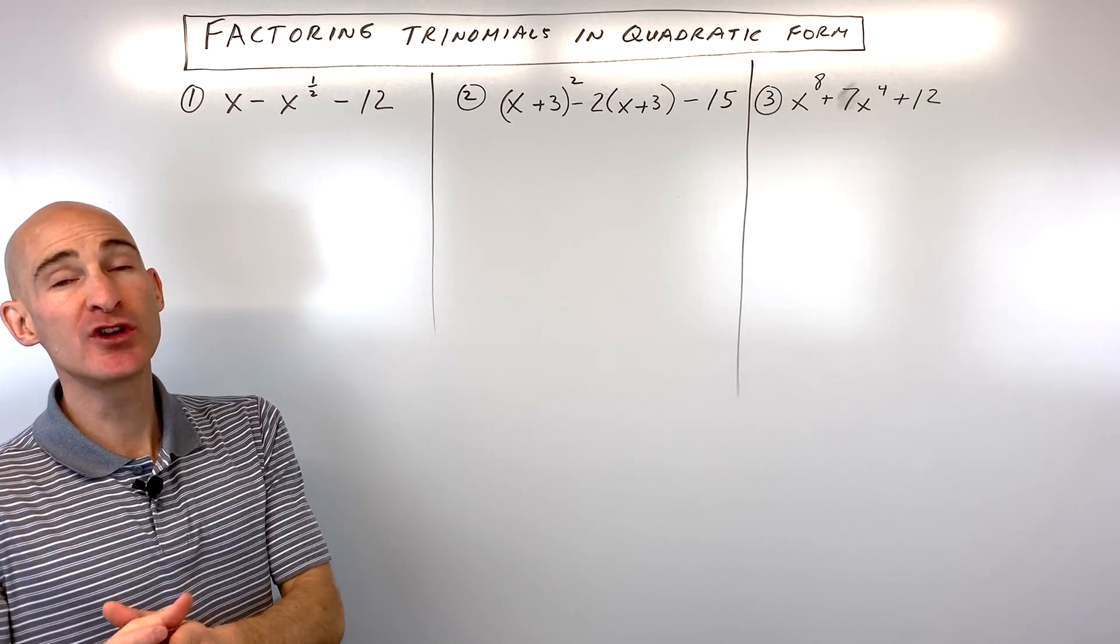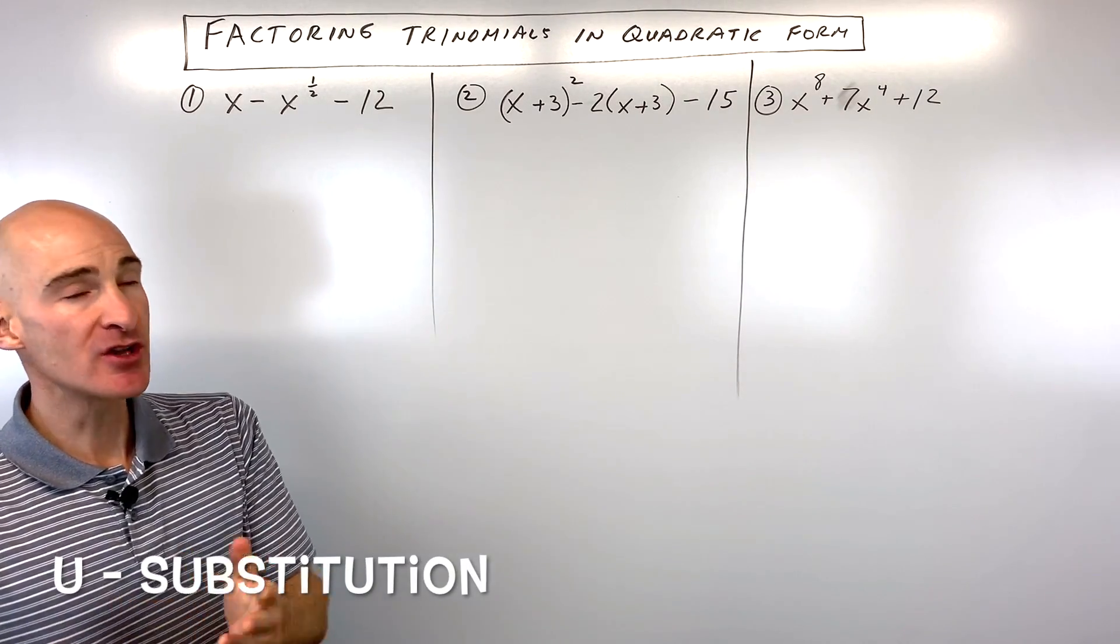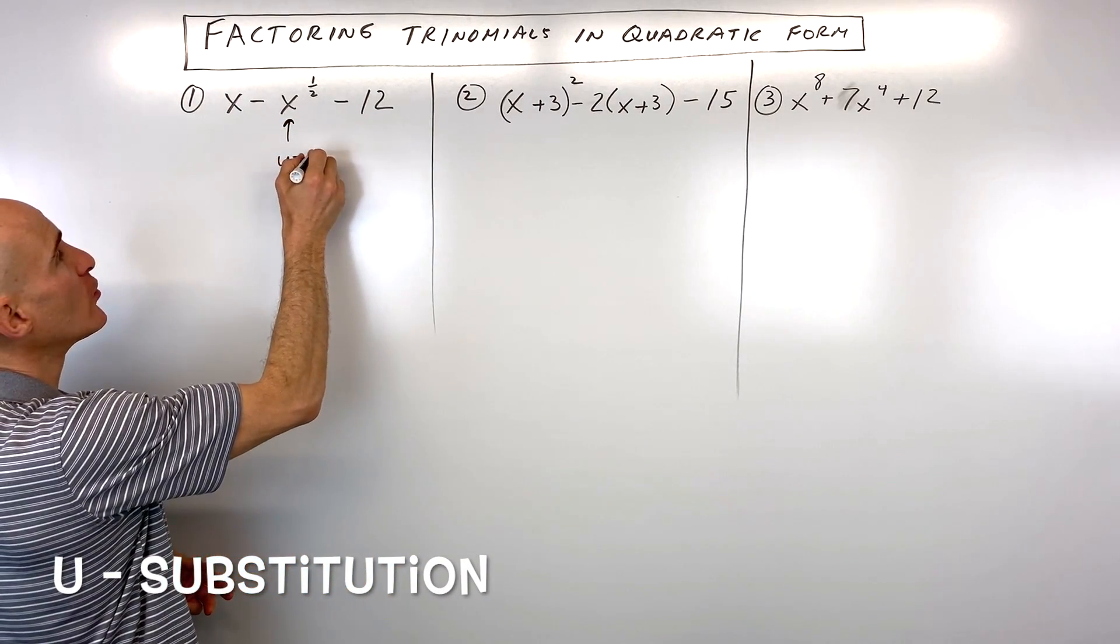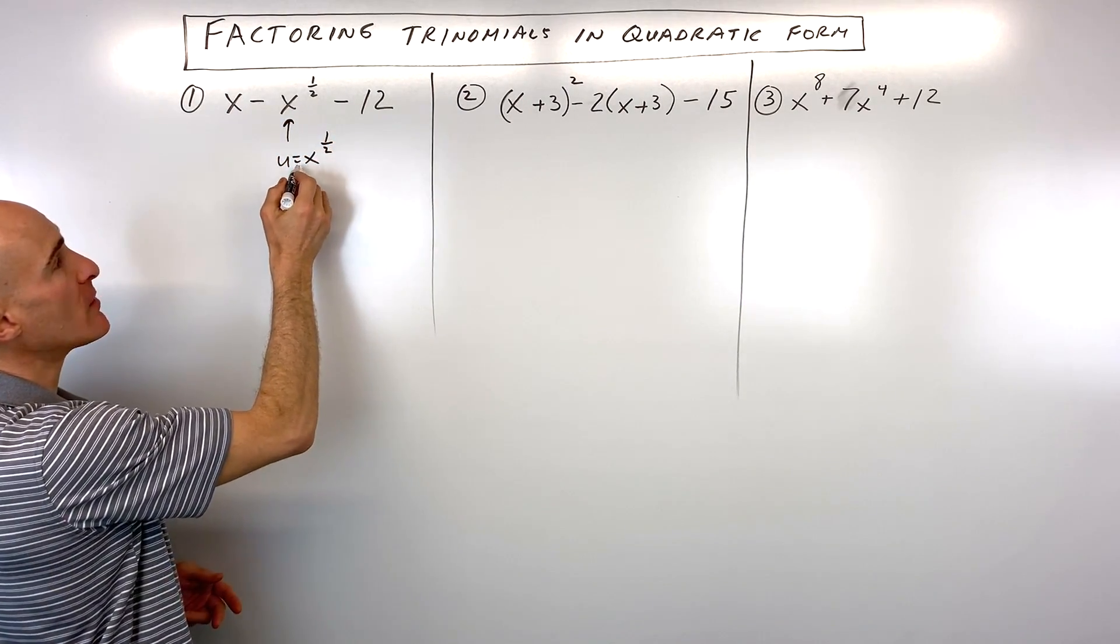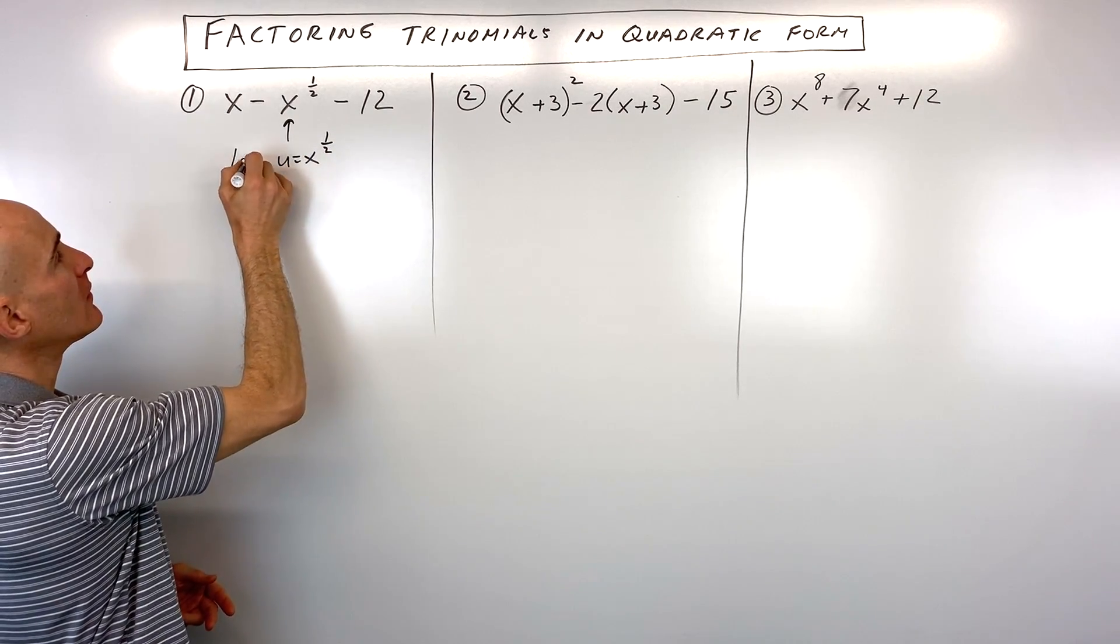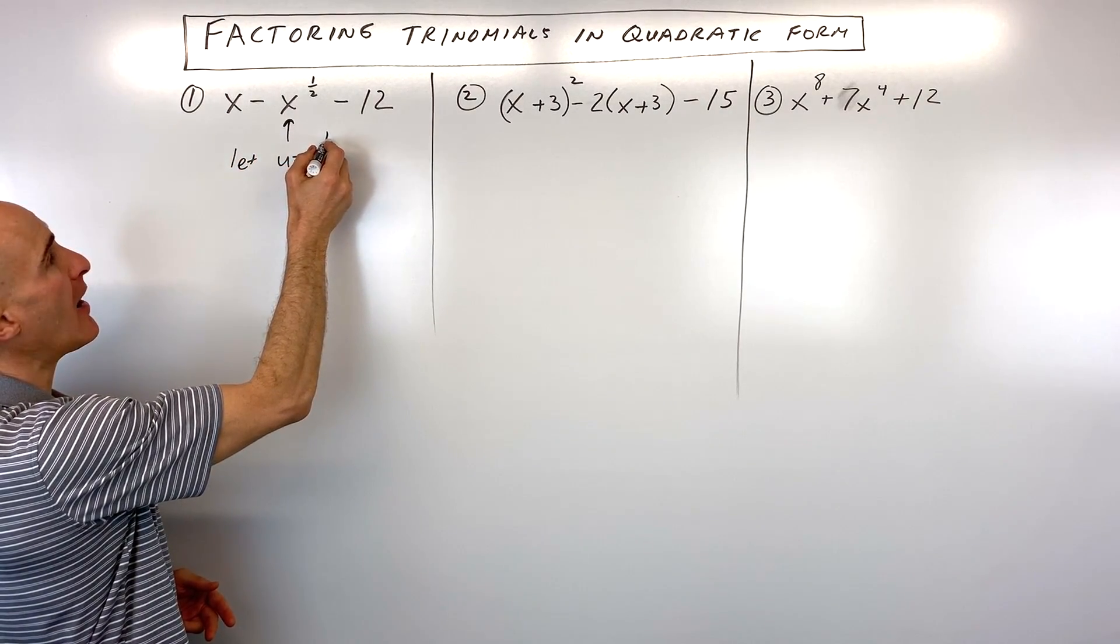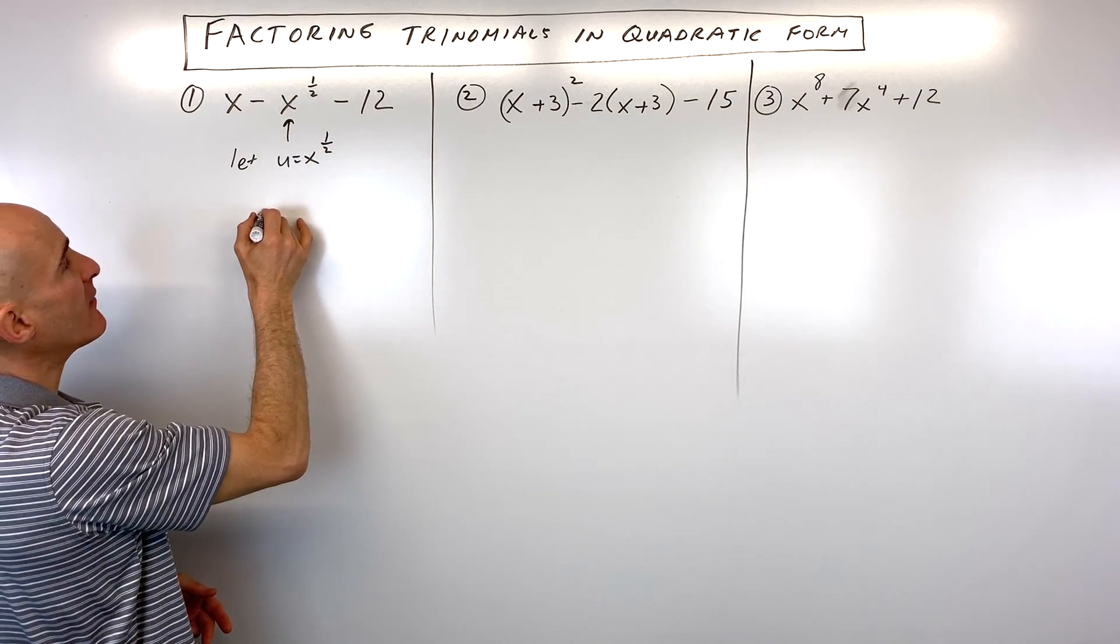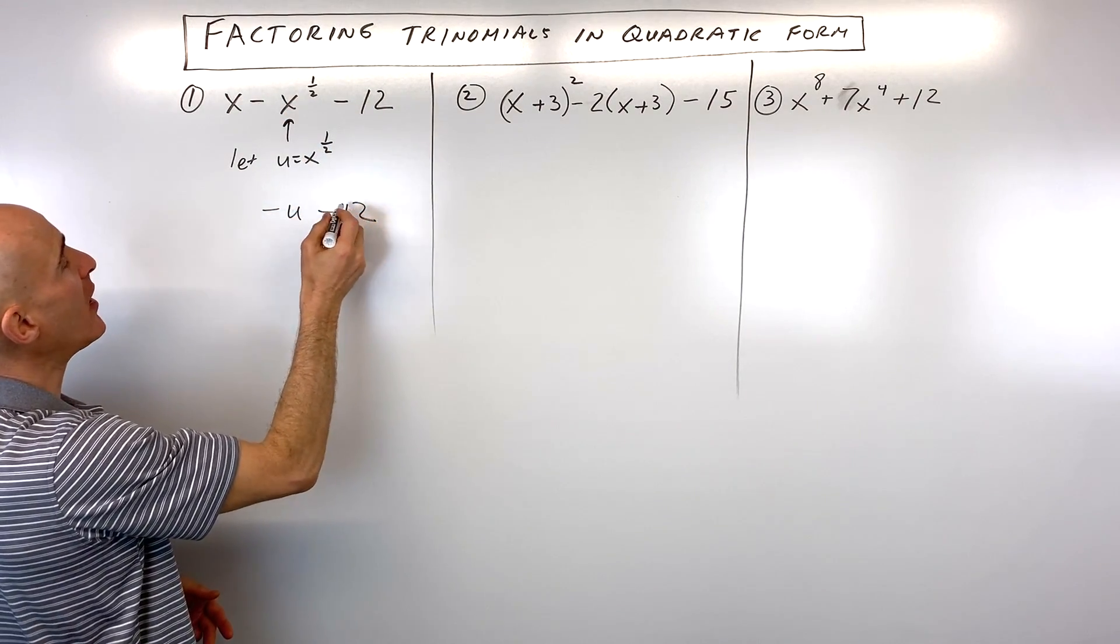Now there's two different methods. One method is where you can make a u substitution. So I'll show you that method first. What you do is you let u equal that middle group, so I'm going to say let u equal x to the one-half power, and so now if we let u equal x to the one-half power, we have minus u minus 12.